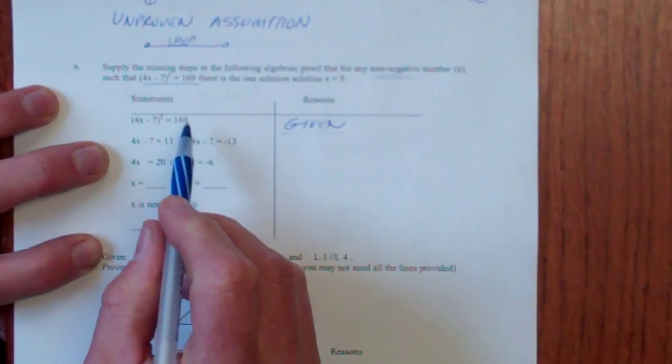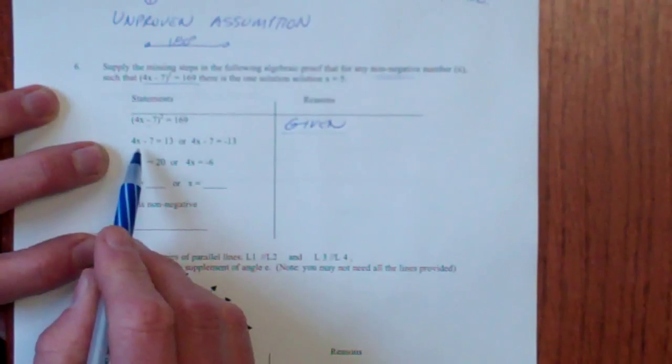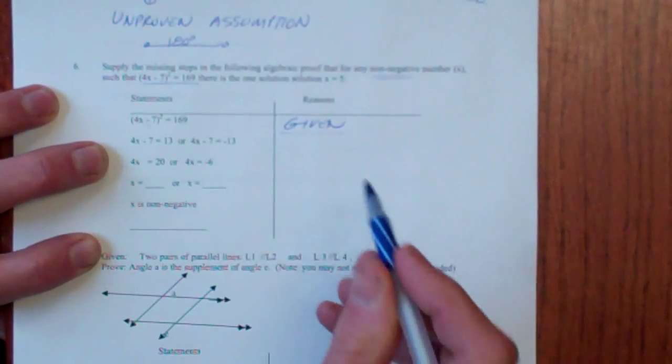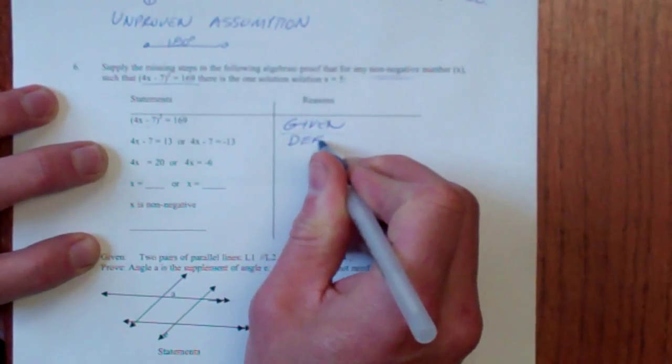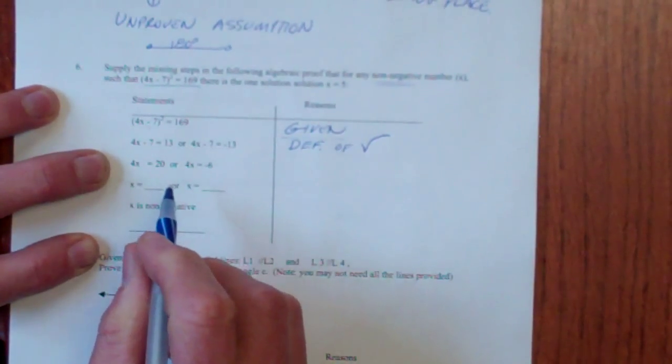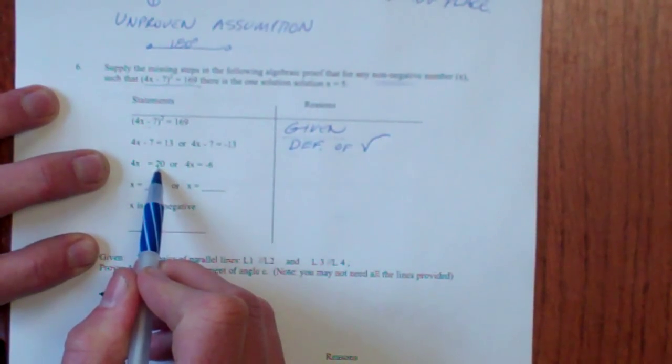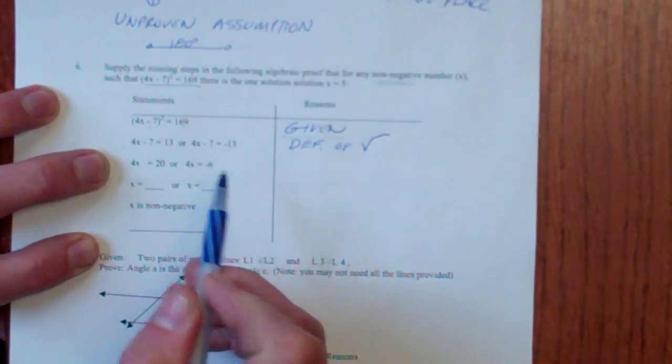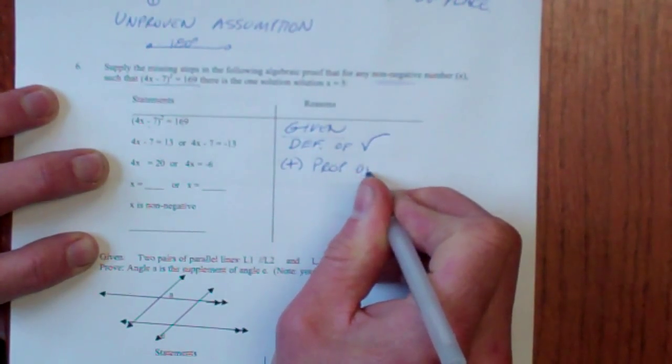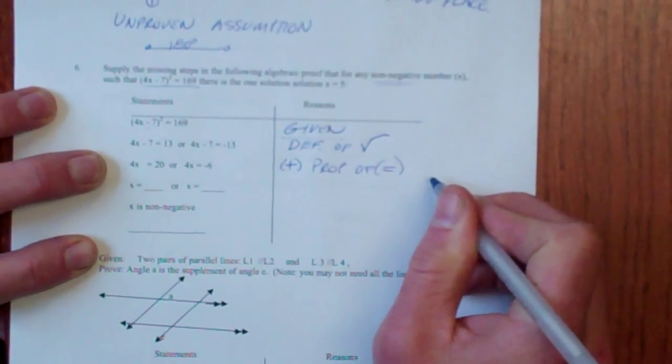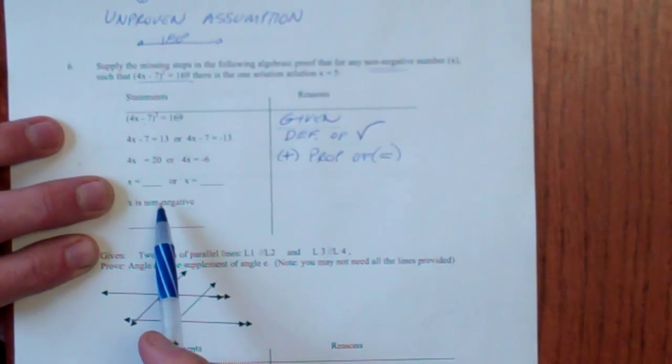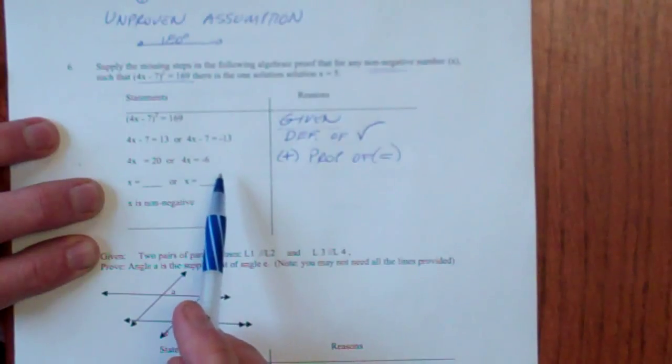I'm starting with this and I'm going to begin by taking the square. Oh, that's given. Given that that is the starting point. You're almost always going to begin with the givens. But now I'm going to immediately take the square root of both sides and I've broken it down so that 4x minus 7 is 13 and negative 13. That's the definition of what a square root is. Definition of square root.